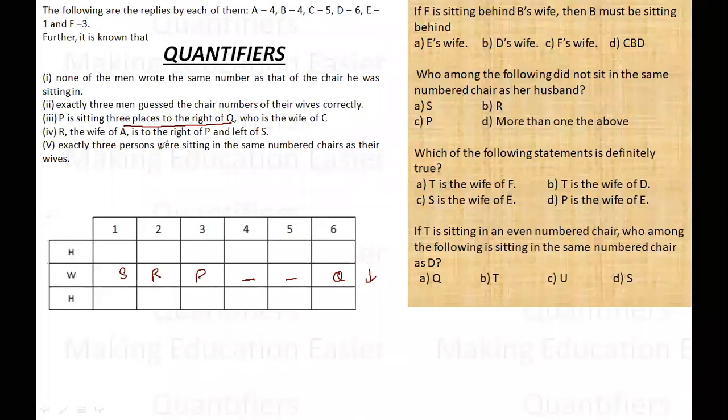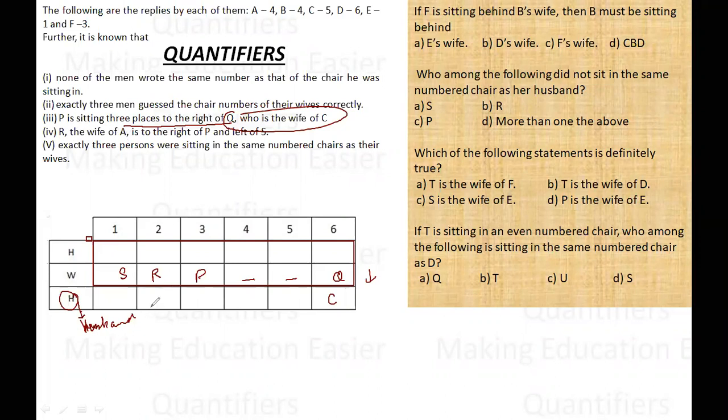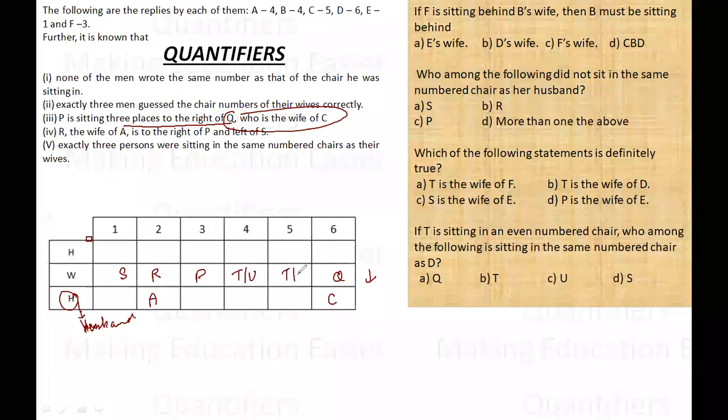So R is to the right of P and left of S, and is to the left of S. So these are the six people, a fairly easy arrangement: S, R, P, space, space, Q. So this is the order in which they are sitting. Now there is some condition given regarding their husbands. P is sitting three places to the right of Q. Q is the wife of C, so Q's husband is C. So here I am writing the husband. This is not a sitting order, here they represent husbands and this area represents the chairs.